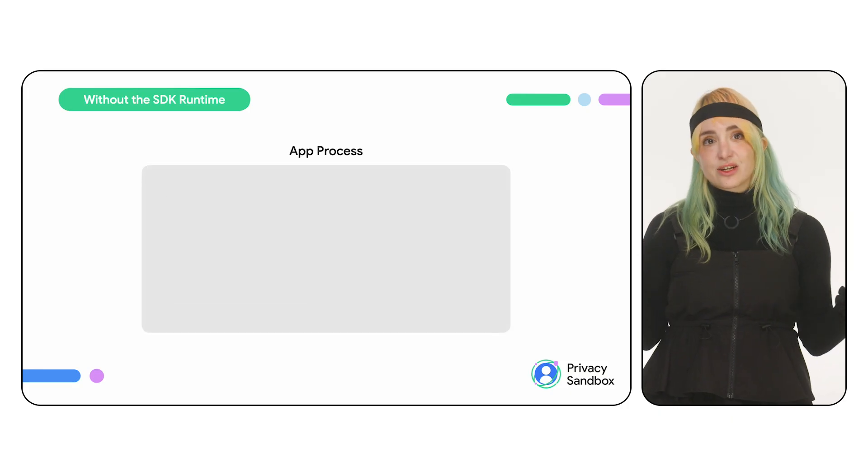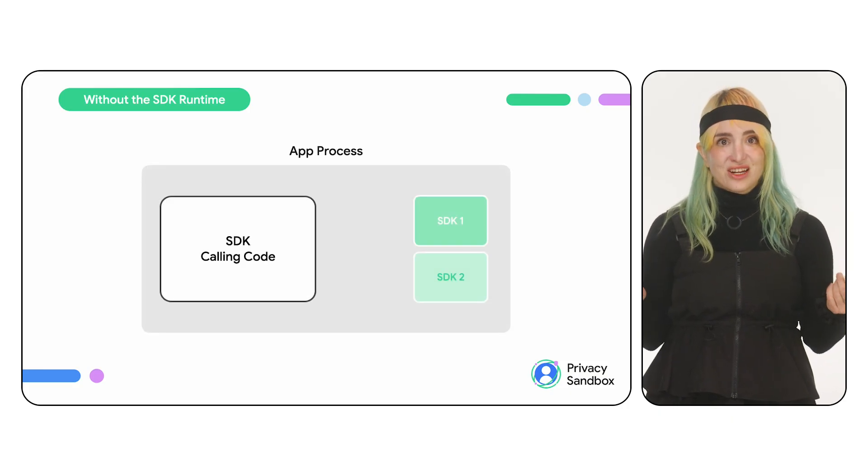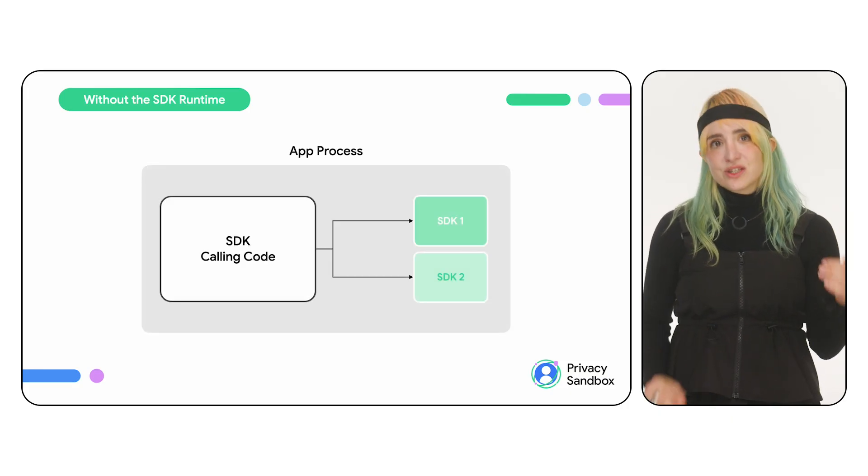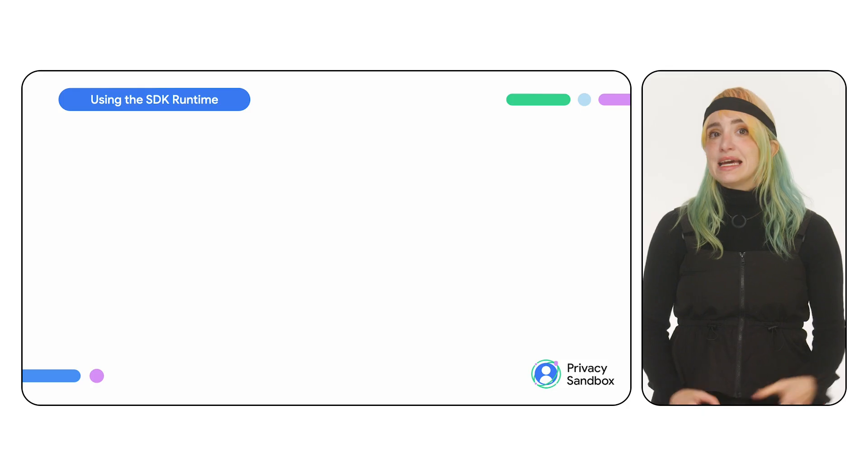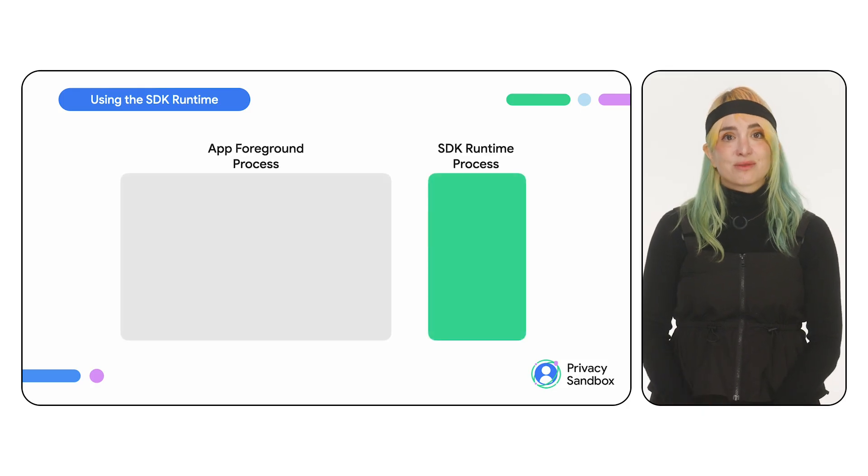We have seen that coupling first- and third-party code brings challenges, so what can you do to address them? Let me introduce you to the SDK Runtime. Android 14 introduces a new architecture that isolates the execution of first- and third-party code by running third-party code in a separate process. Think of it as app sandboxing, but applied to the third-party code. Each app has its own SDK runtime process.